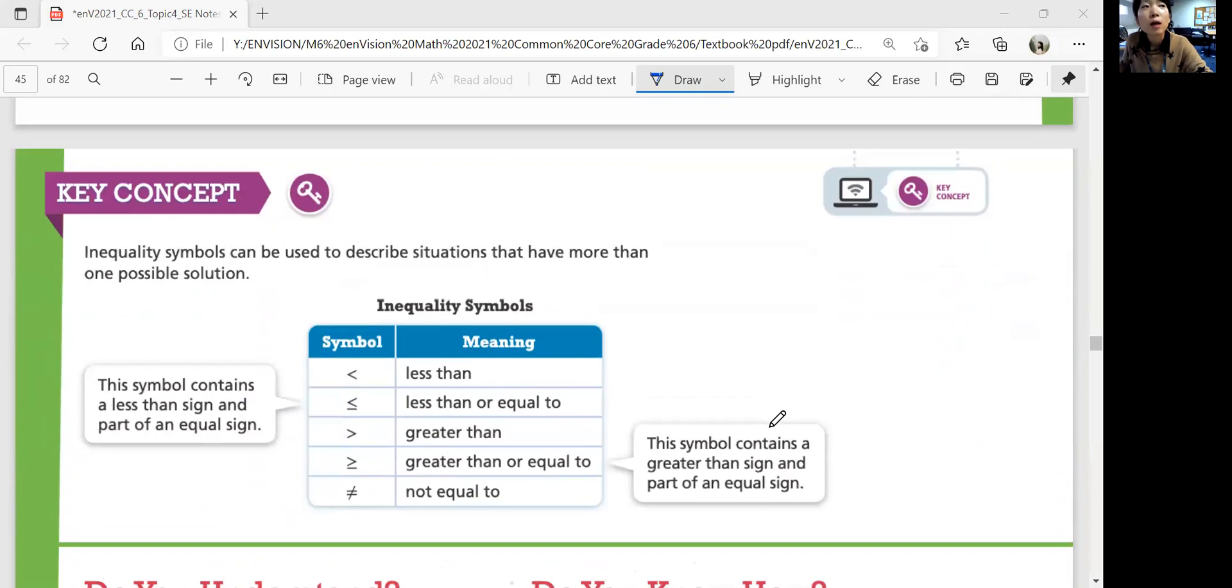In summary, inequality symbols can be used to describe situations that have more than one possible solution. So we have less than, less than equal to, greater than, greater than equal to, not equal to. These are the symbols for the inequalities. Okay?